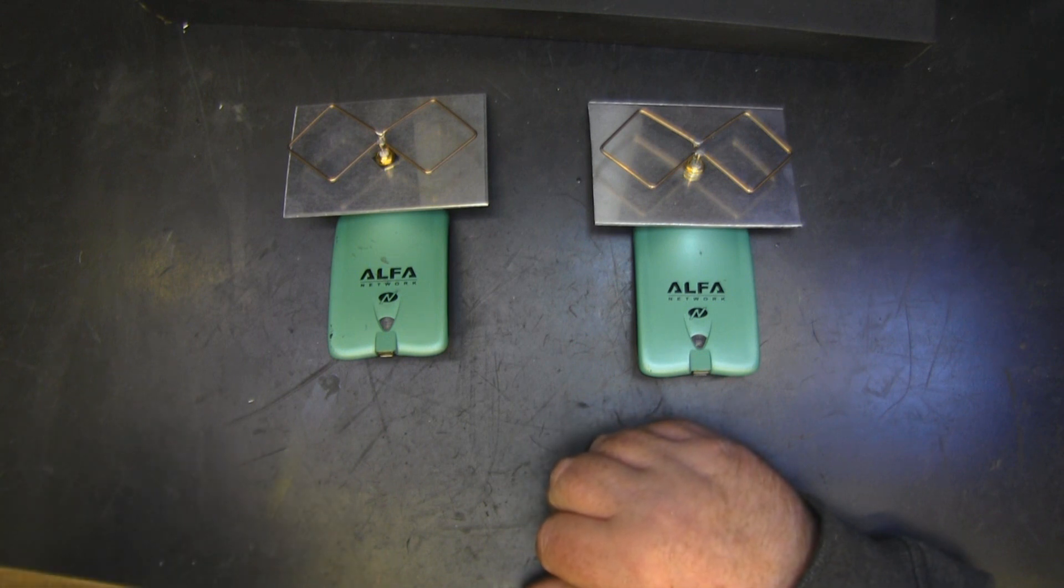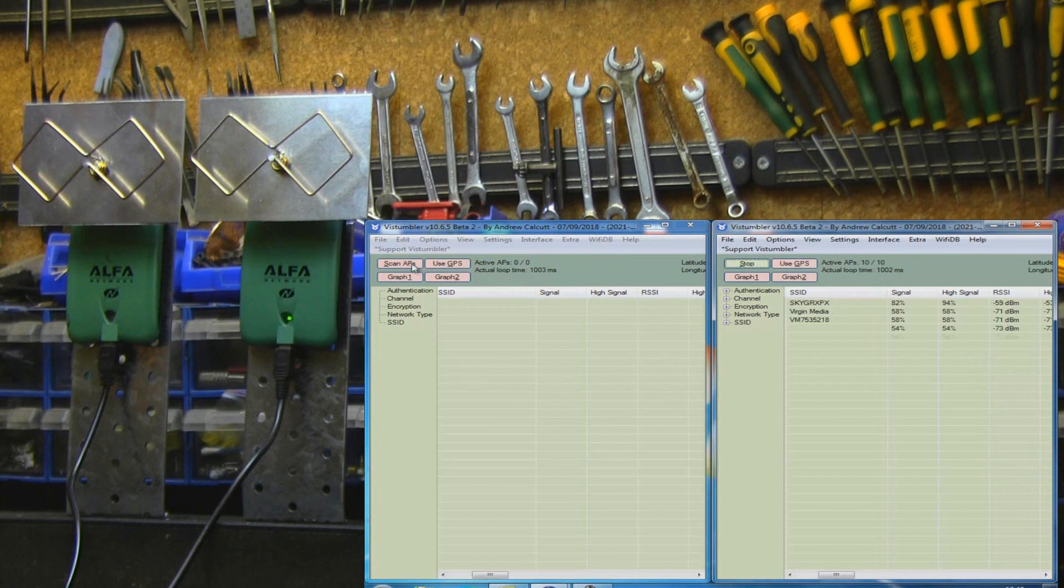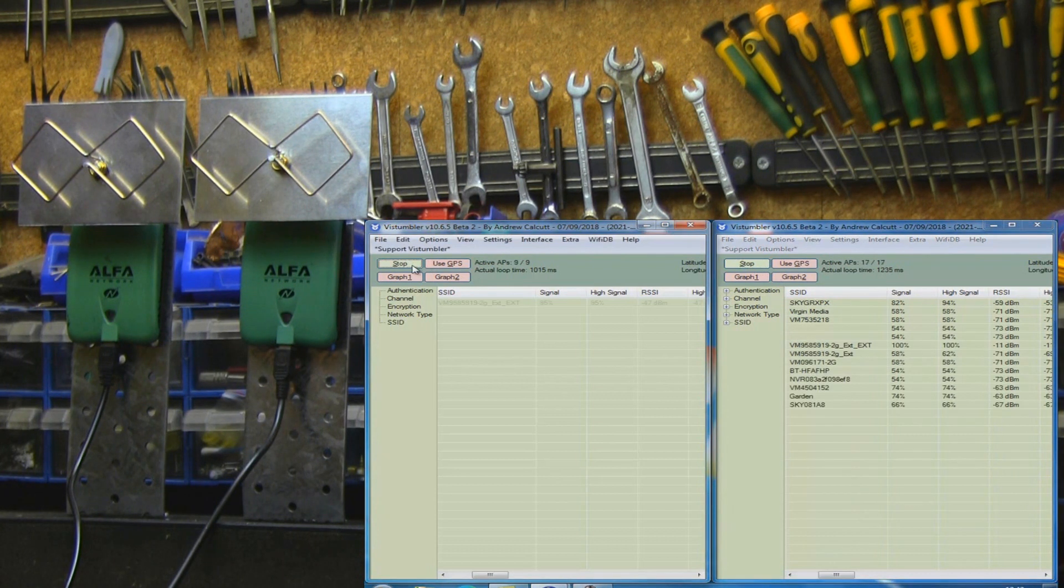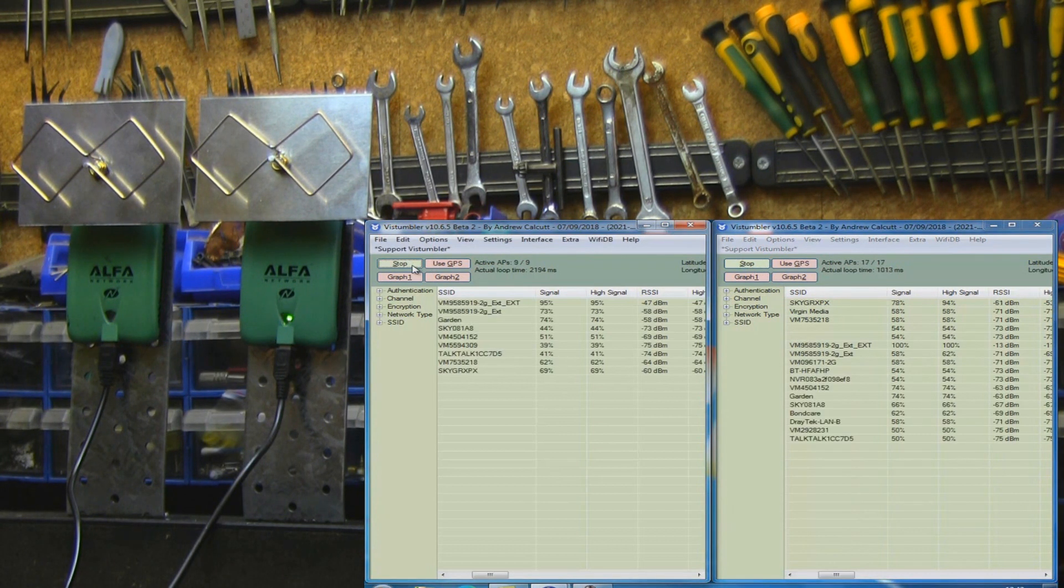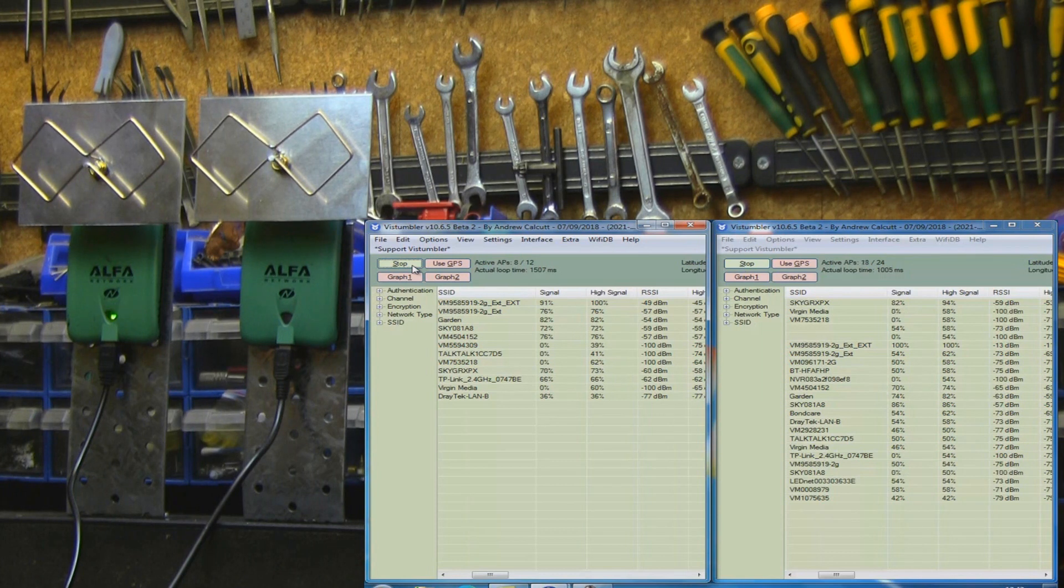So let me do the first test. We'll test for the access points, see if we see any difference, and then we'll go on to the second test. So let's give both of these a scan and see if we can see anything with the access points that they pick up. I'll just give them a minute to load up. We can already see that the grounded one is picking a few more access points up, and that is quite obvious.